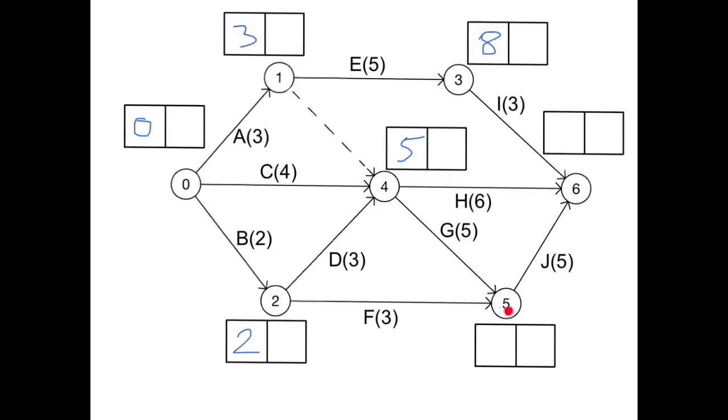To be at event 5, we could be at 2 and then do F, giving us a starting point of 5. However, we also need G to feed into it, so we'd have to be at 4 with a starting time of 5, plus that time of 5, giving an earliest start time of 10.